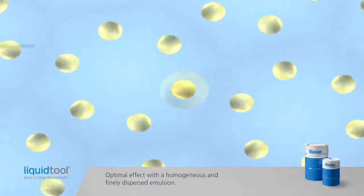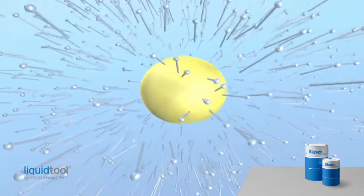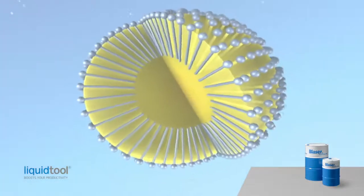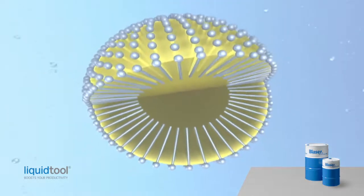For the stable distribution of each oil drop in the water, it has to be encapsulated in an emulsifier skin. This comprises a surfactant that enables stable mixing of oil with water.